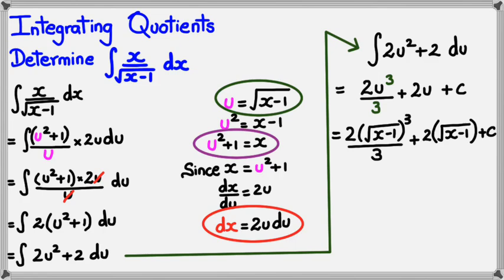That's about it for integrating quotients. Whether you're integrating products or quotients, always use the substitution method and make sure you have the same letters throughout — if you substitute u in terms of x, make sure there are no x's remaining when you integrate. That's about it for this session. Thank you for watching.